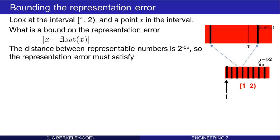Remember that the distance between representable numbers is 2 to the negative 52. So the distance halfway across the gap is 2 to the negative 53. It's clear that since x is between two representable numbers, at most it is 2 to the negative 53 away from a representable number. Therefore, the representation error must satisfy this bound.